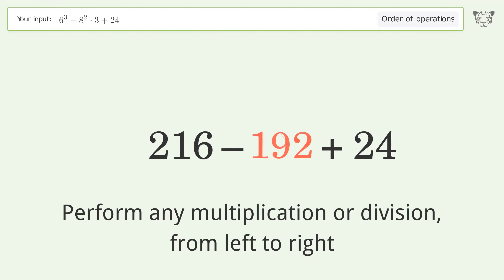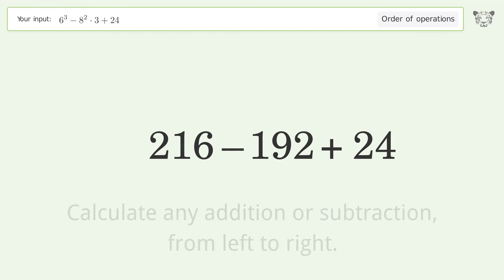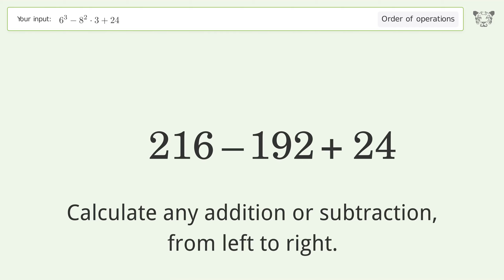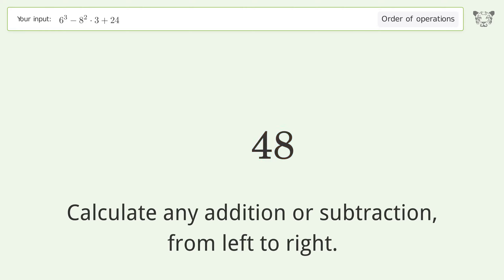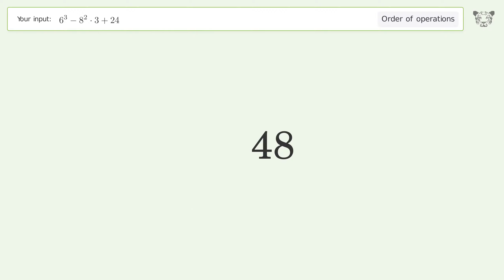Calculate any addition or subtraction from left to right: 216 minus 192 equals 24, and 24 plus 24 equals 48. So the final result is 48.